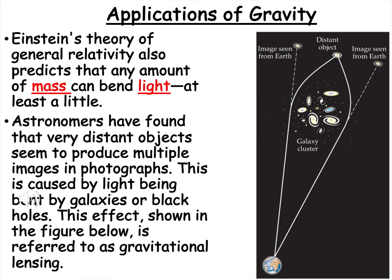Another application of Einstein's theory of general relativity and universal gravitation is it predicts that any amount of mass can bend light at least a little bit. Astronomers have found that very distant objects seem to produce multiple images in photographs. This is because the light is being bent by galaxies or the black holes. This effect is shown in the figure over here, and it's referred to as gravitational lensing. So we can see an image from Earth of all of these things in many different ways because it's being bent around them, so this object right here is being bent around this, and we're seeing it in this location and this location even though it's actually located in this location.